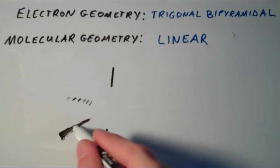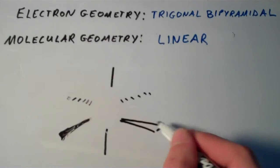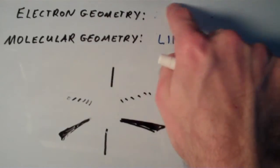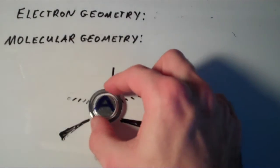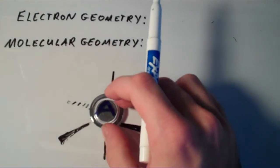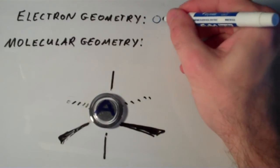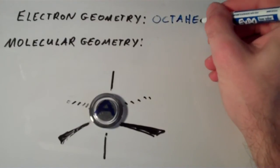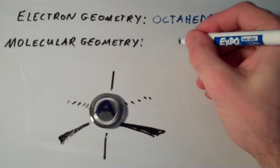In previous videos I discussed that if we have six electron groups around an atom, then that is going to yield an octahedral geometry. And you guessed it, if none of these electron groups are lone pairs, then the molecular geometry will also be octahedral.